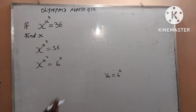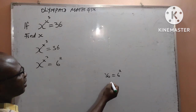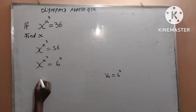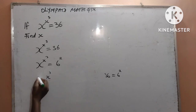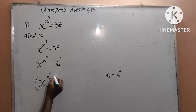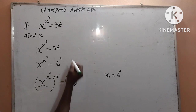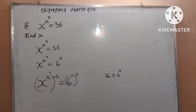Then, next I will multiply both sides of the powers by 3. I want to multiply both sides of the powers by 3. That is going to give me x to the power of x to the power of 3, multiplied by 3, is equal to 6 to the power of 2, also multiplied by 3. That is what I have done.